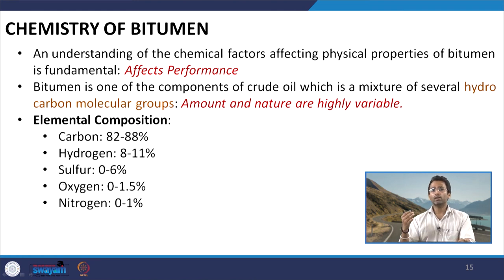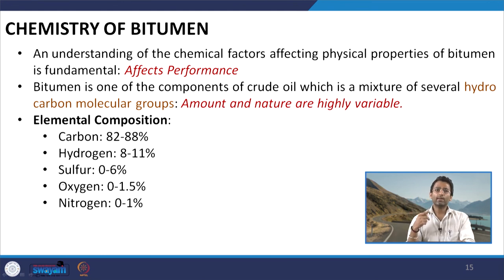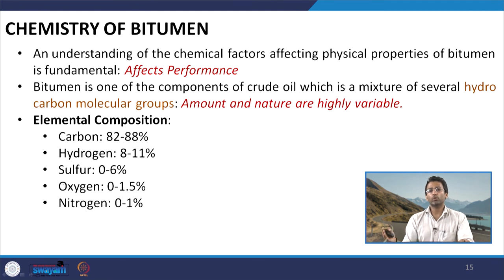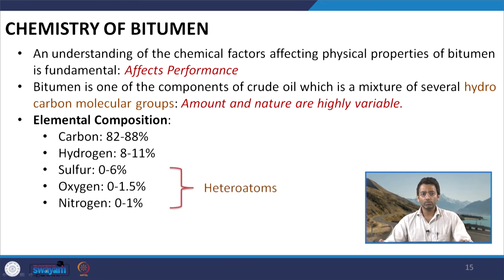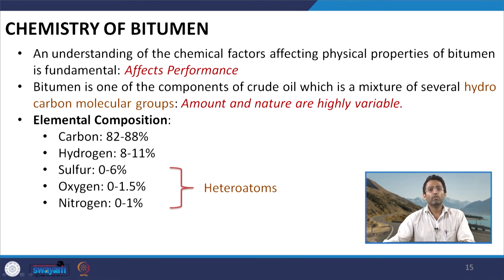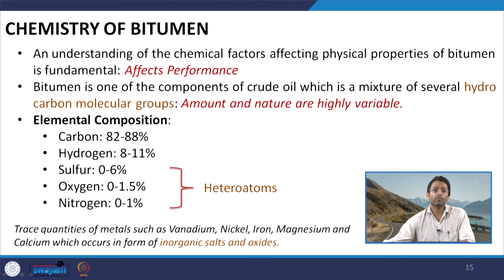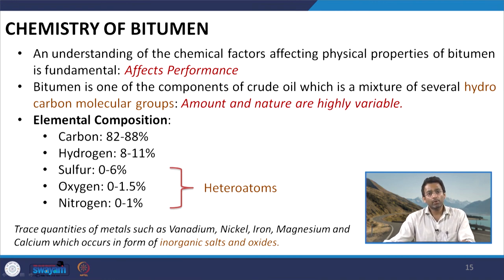However, we can definitely understand the chemistry of bitumen in a broader aspect. Let us first look at the different elements of which bitumen is composed. Bitumen is essentially a hydrocarbon, so carbon and hydrogen are definitely a part of bitumen, where carbon can be in the range of around 82 to 88 percent, whereas hydrogen can be in the range of 8 to 11 percent typically. We also have presence of certain heteroatoms — sulfur, oxygen and nitrogen — where sulfur is from 0 to 6 percent, whereas oxygen and nitrogen typically are less than 2 percent. In addition, bitumen can also have trace quantities of different metal elements such as vanadium, nickel, iron, magnesium and calcium, existing as inorganic salts and oxides.